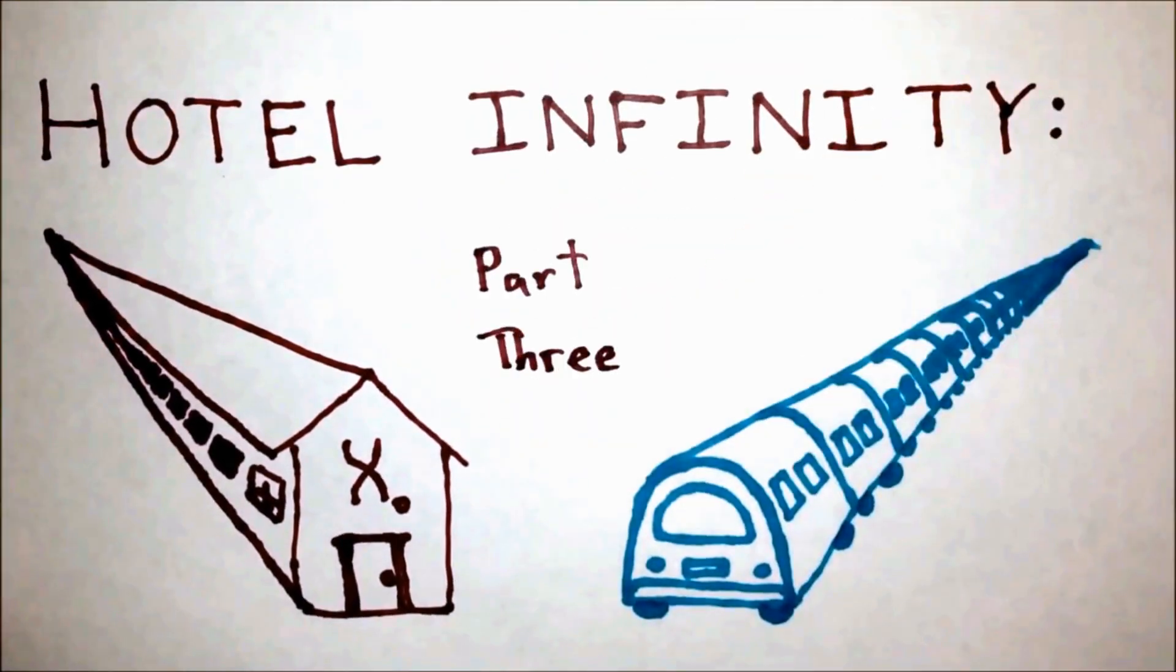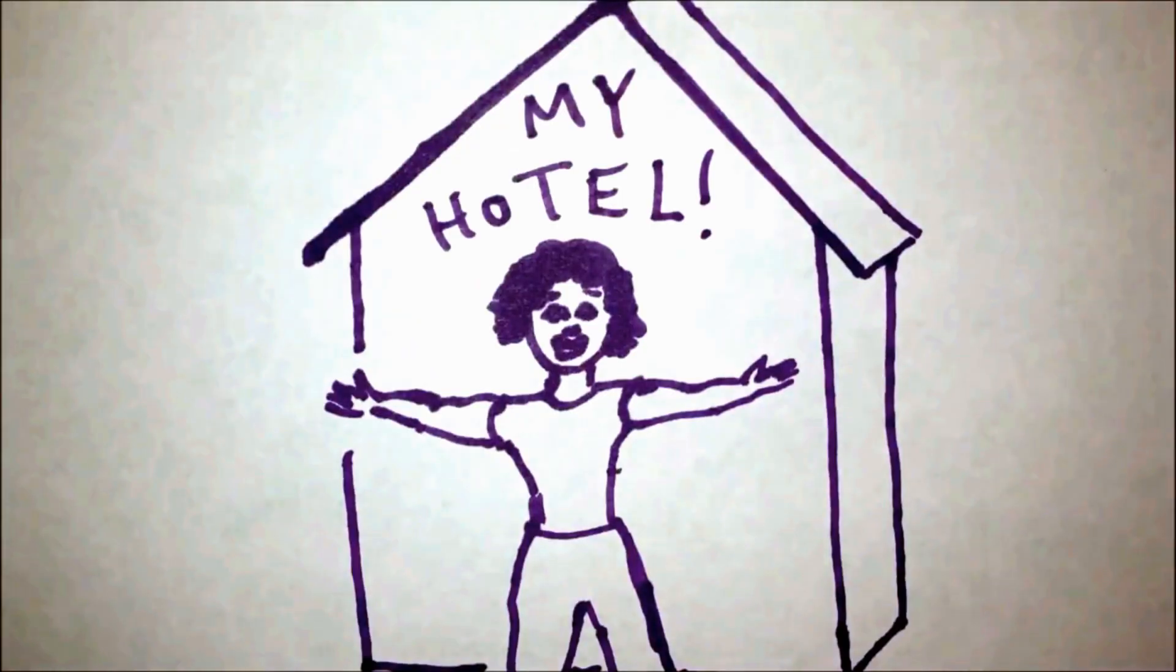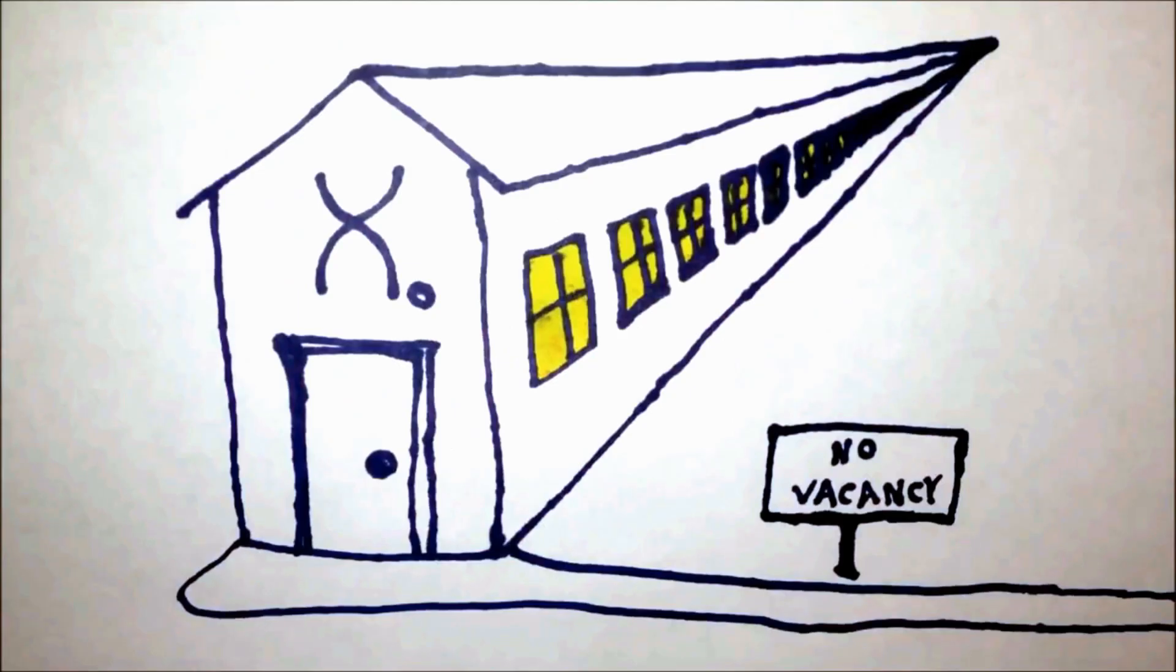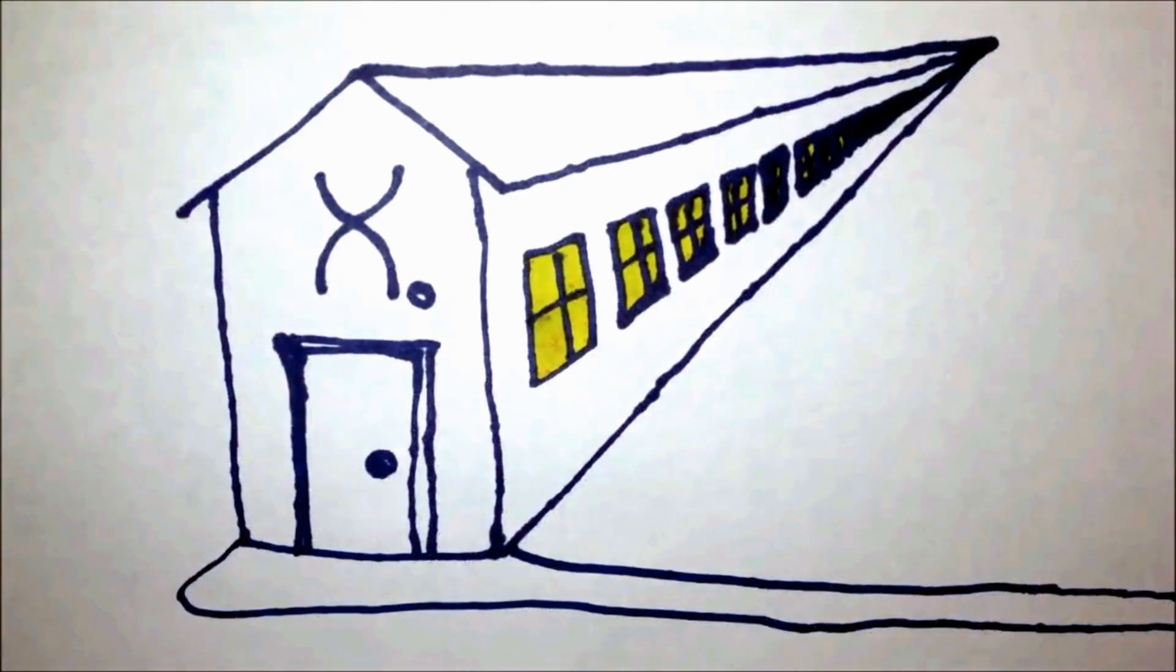Hotel Infinity Part Three recap: You are the proprietor of a hotel with an infinite number of rooms. One nice thing about this is that even when all the rooms are full, you can still make room for new guests.